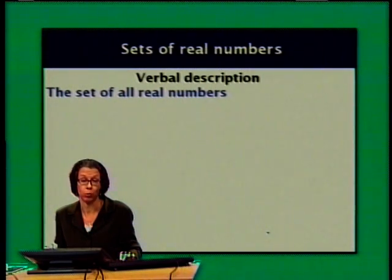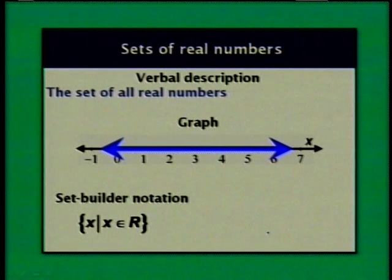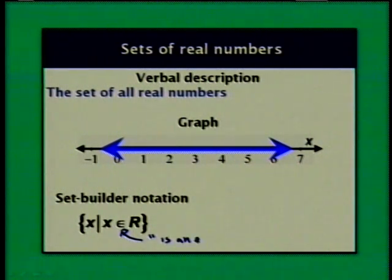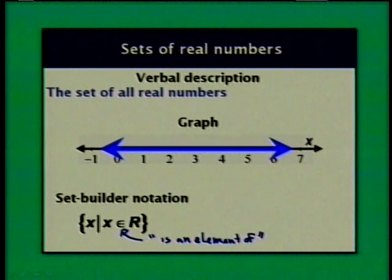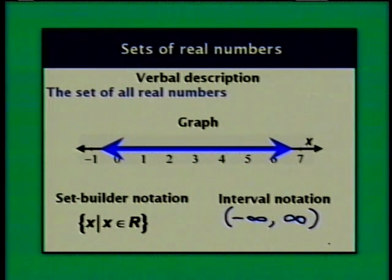Now let's look at the set of all real numbers. We had the bold R symbol for this. In set builder notation, this is the set of all x such that x is an element of the set of real numbers. Since this notation is a bit much, I tend to use interval notation: the set has no smallest element, so I use negative infinity, and no largest element, so I use positive infinity — giving (−∞, +∞), which describes the set of all real numbers.